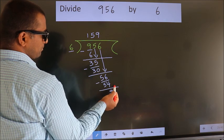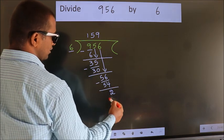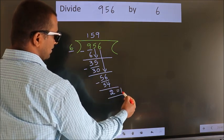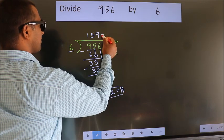No more numbers to bring down. So, we stop here. This is our remainder. This is our quotient.